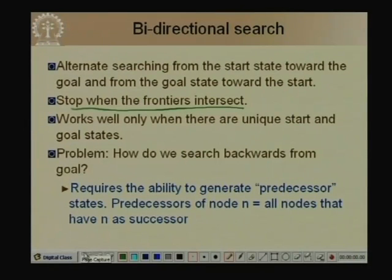However, to do bidirectional search we must start from a goal state. Many problems have many goal states, making it difficult to decide which to start from. Bidirectional search works best when there is one goal state. A second challenge is how to search backwards — this requires reversible operators so we can generate predecessors of a state as well as successors. In such problems, bidirectional search is helpful.